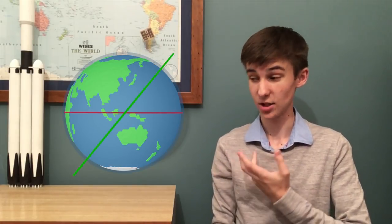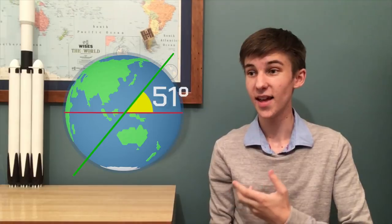Timing is important because the International Space Station's orbit is inclined to 51 degrees. What the heck does that mean? Well, what it means is that here's the equator, and here's the International Space Station's orbit. And the angle between them is 51 degrees.